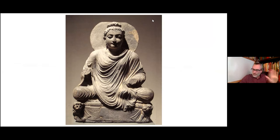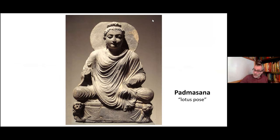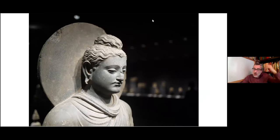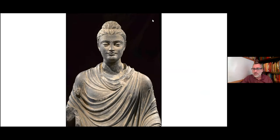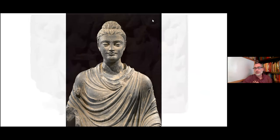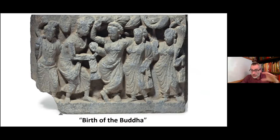Here's our seated Gandharan Buddha — we can infer he was making the mudra of fearlessness — and the clenching of the robe. He's in the padmasana, the lotus pose, seated on a lion throne — you can see the two little lions in the corners. The hair top knot, long earlobes, and halo are classic Buddha imagery. Also note the full coverage of both shoulders — a very Greek-style robe. We'll see something different when we go to Southeast Asia.